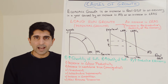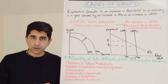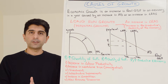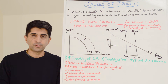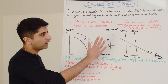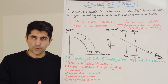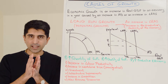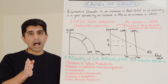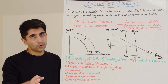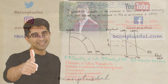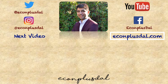That means you now understand both actual growth (short-run growth) and potential growth (long-run growth). You can illustrate both on diagrams and you know the specific causes. Thank you for watching — I'll see you in the next video where we look at the economic cycle.